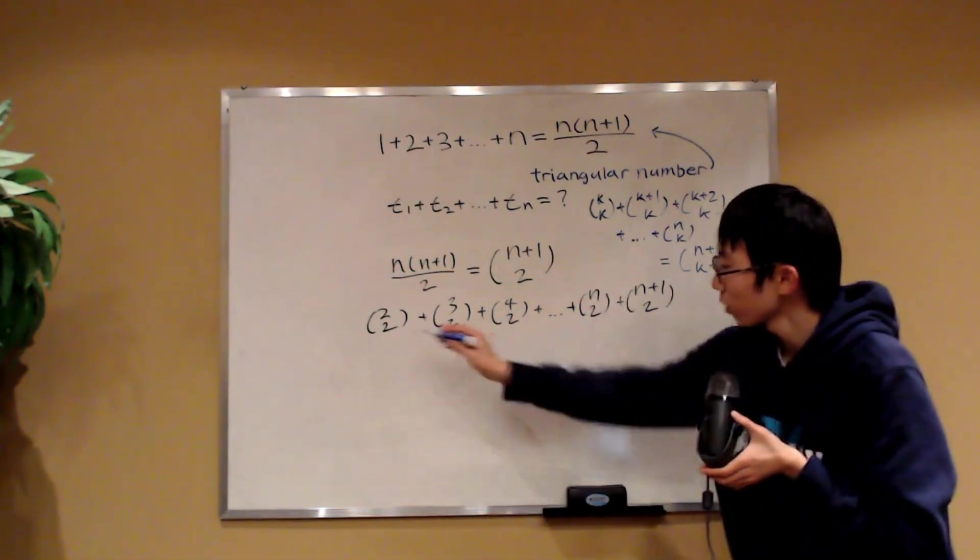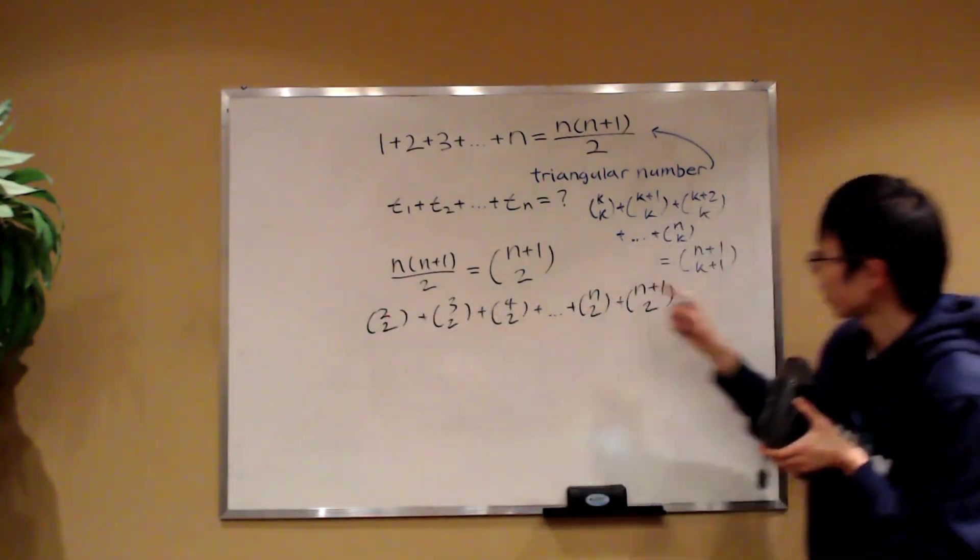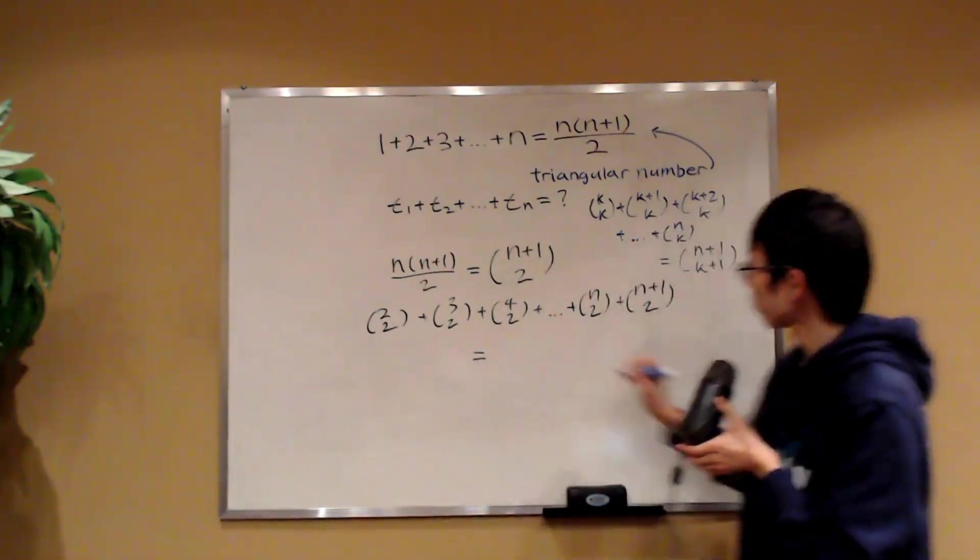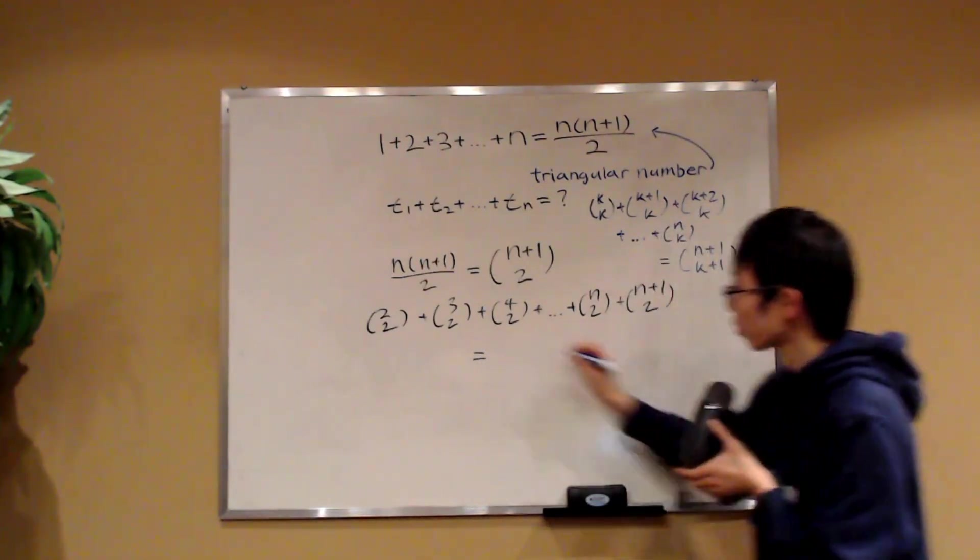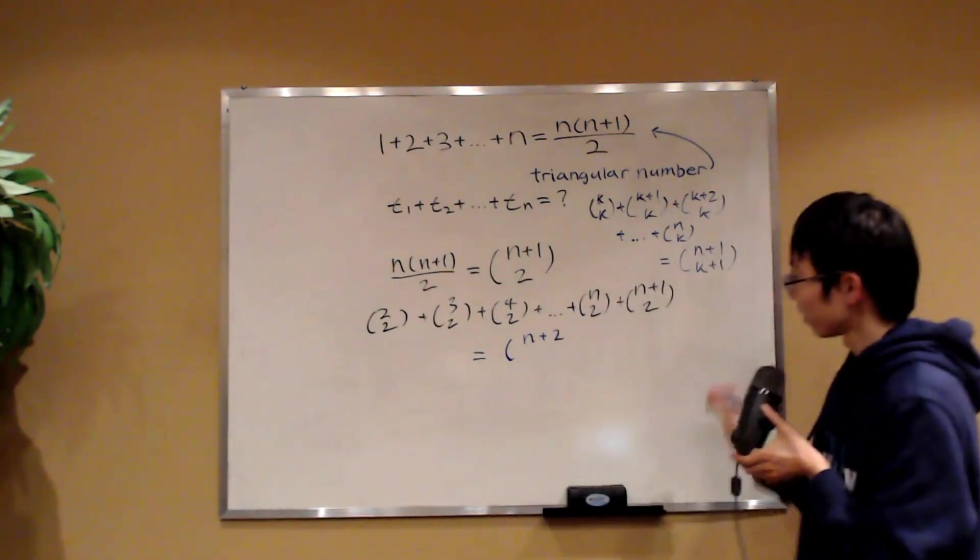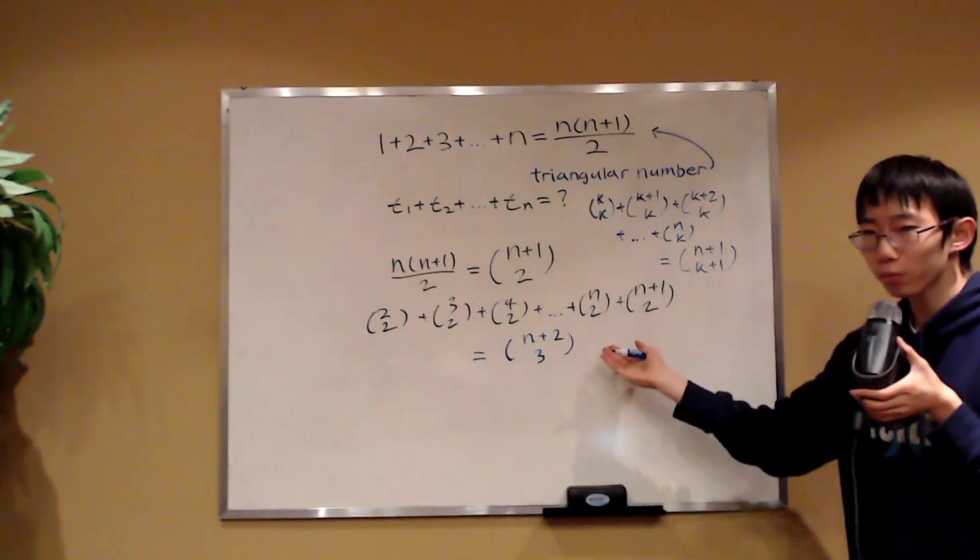We have 2 on the bottom, and we start from 2 here and go up to n plus 1. By hockey stick identity, the sum would be equal to n plus 2 choose 3. And that's the formula.